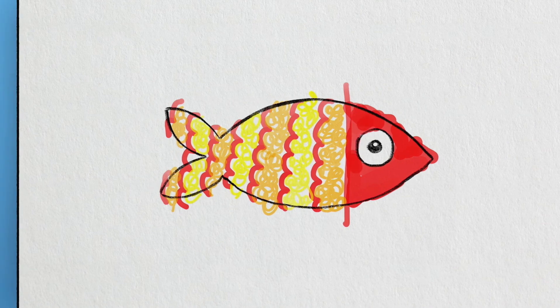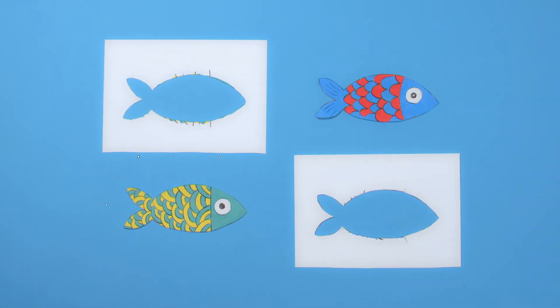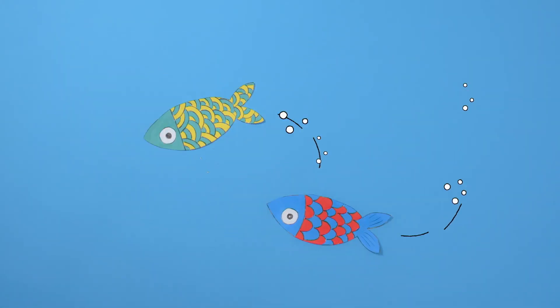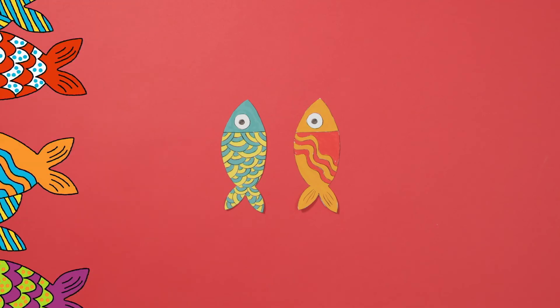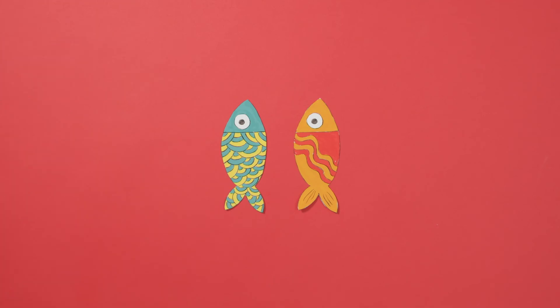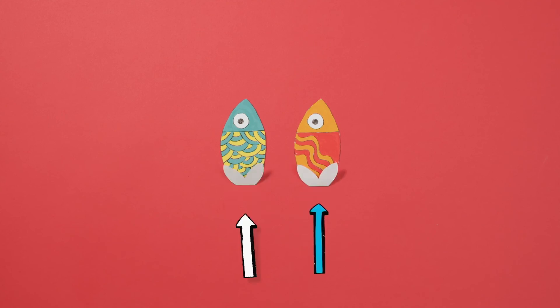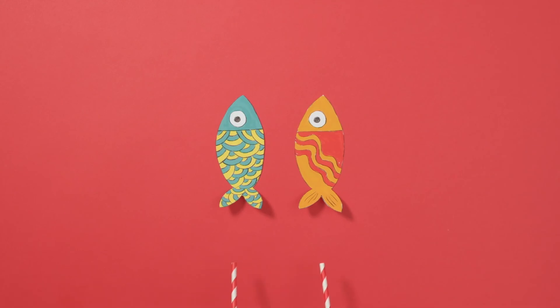Then simply cut them out. See, told you not to worry about going over the lines. Aren't they fin-tastic? Fold the tails up and back down like this. Take another piece of paper and draw a watery finish line. Tape it down on a floor or table. Each player gets a straw, and the winner is the first to blow their fish over the finish line.